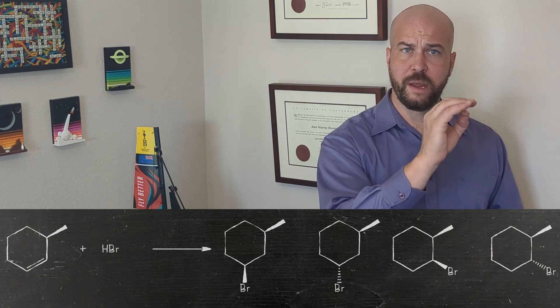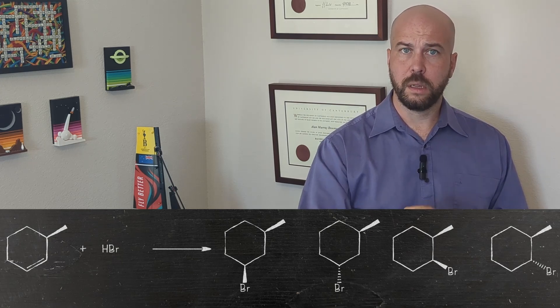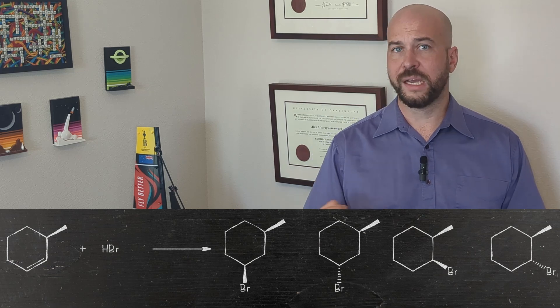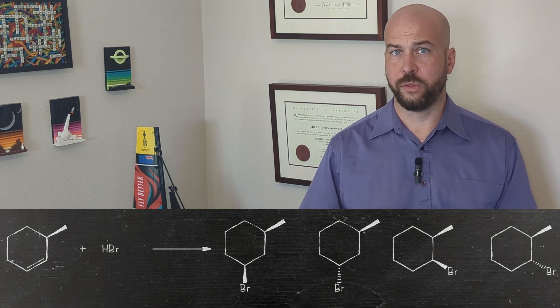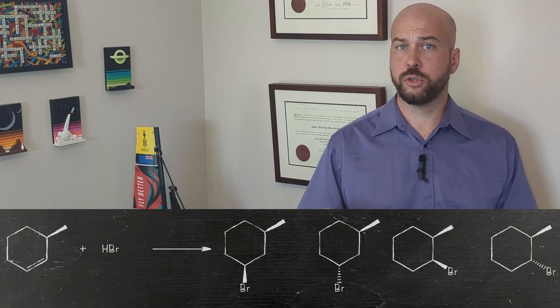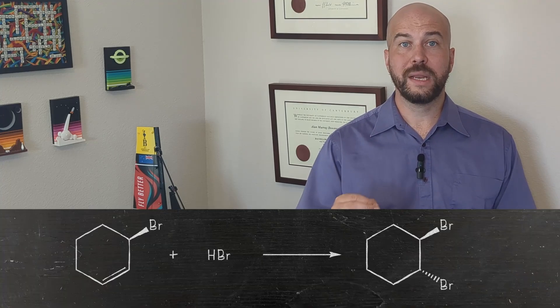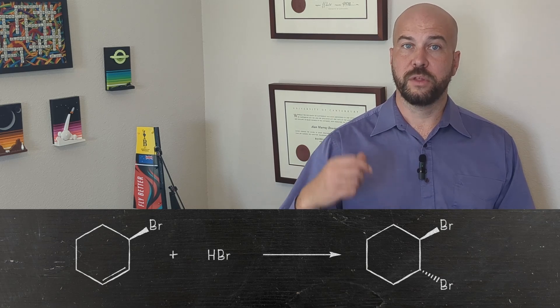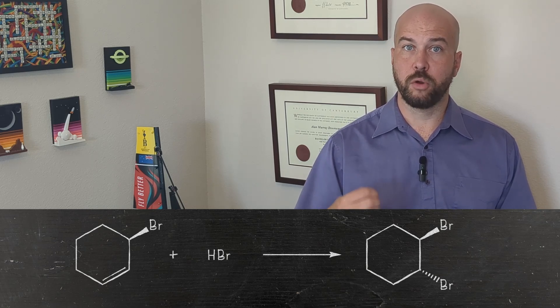Now we can draw out chemical structures to represent this—maybe that will make it clearer for you. When we have the 3-methylcyclohex-1-ene, we get these four products: the two isomers of 1-bromo-3-methylcyclohexane and the two isomers of 1-bromo-2-methylcyclohexane. And when the reaction involves 3-bromocyclohex-1-ene, we only get a single product: the trans-1,2-dibromocyclohexane.